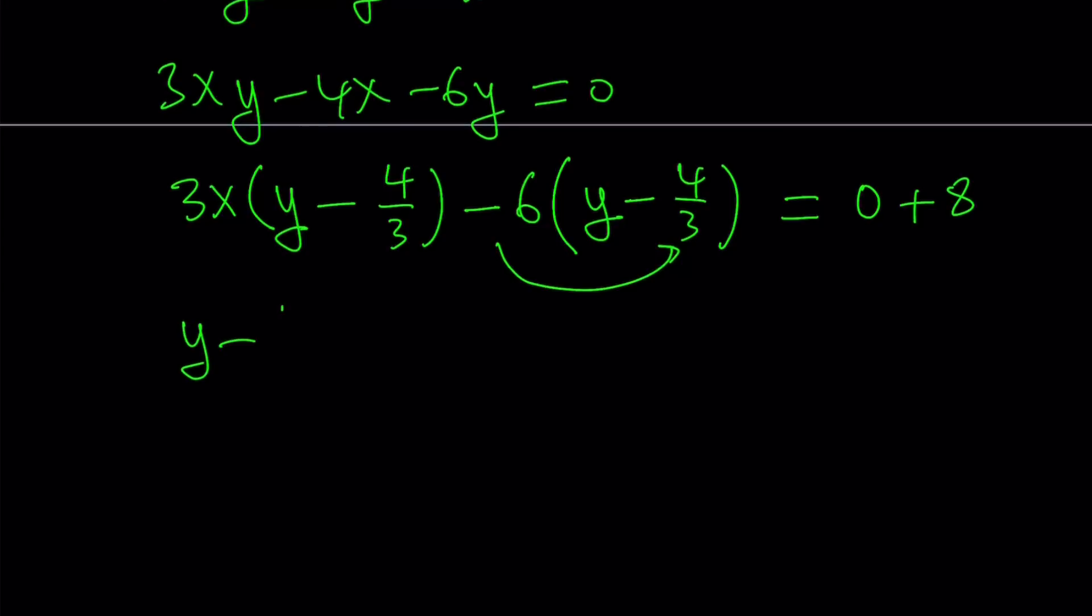Now y minus 4 thirds is a common factor. And then the other factor is 3x minus 6. And the right hand side is 8.